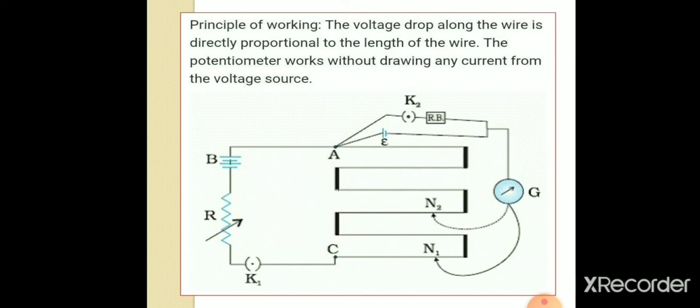The principle behind the working of a potentiometer is that the voltage drop along the wire is directly proportional to the length of the wire. The potentiometer works without drawing any current from the voltage source.